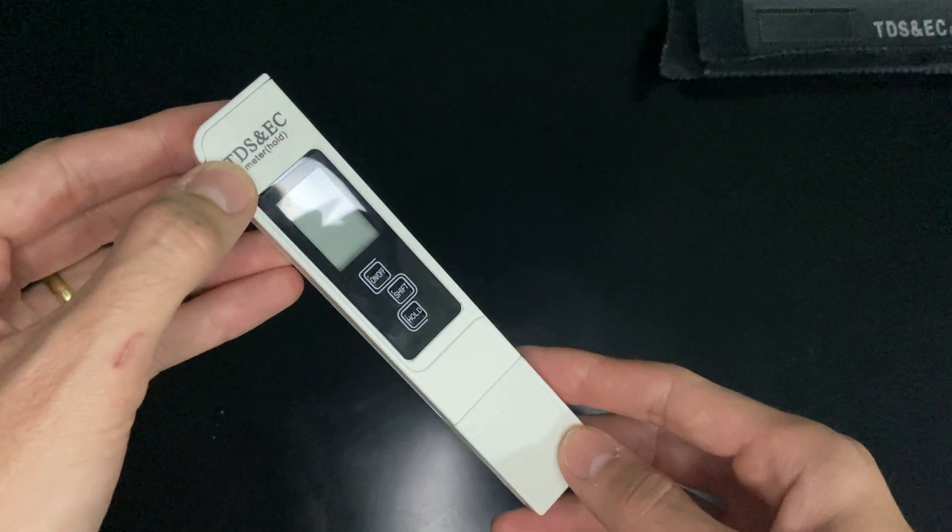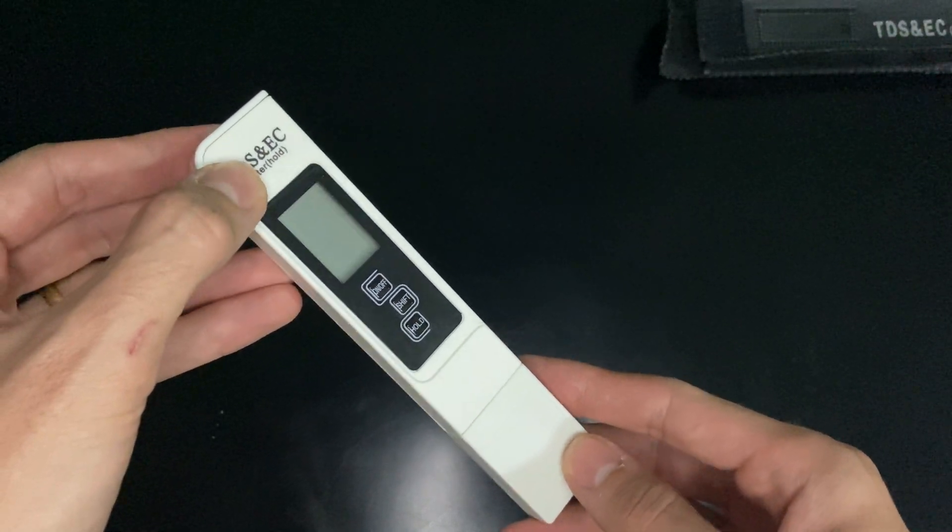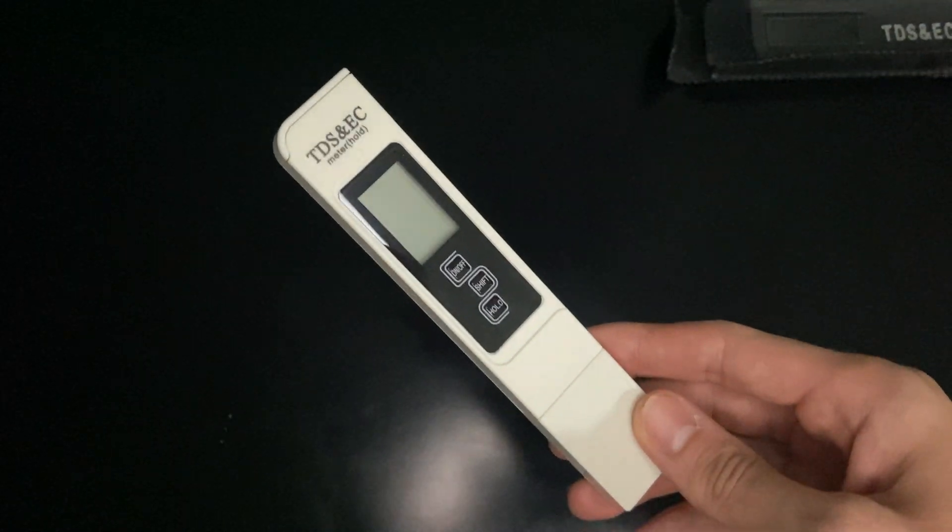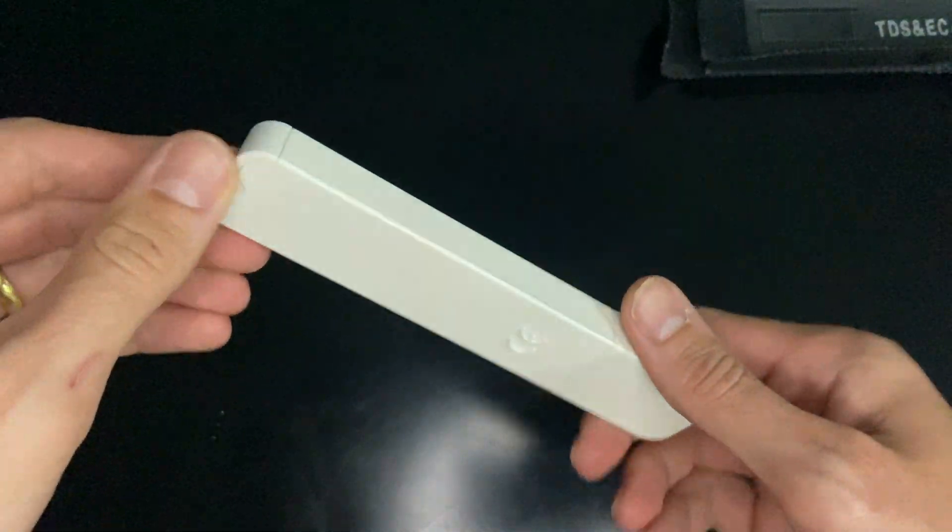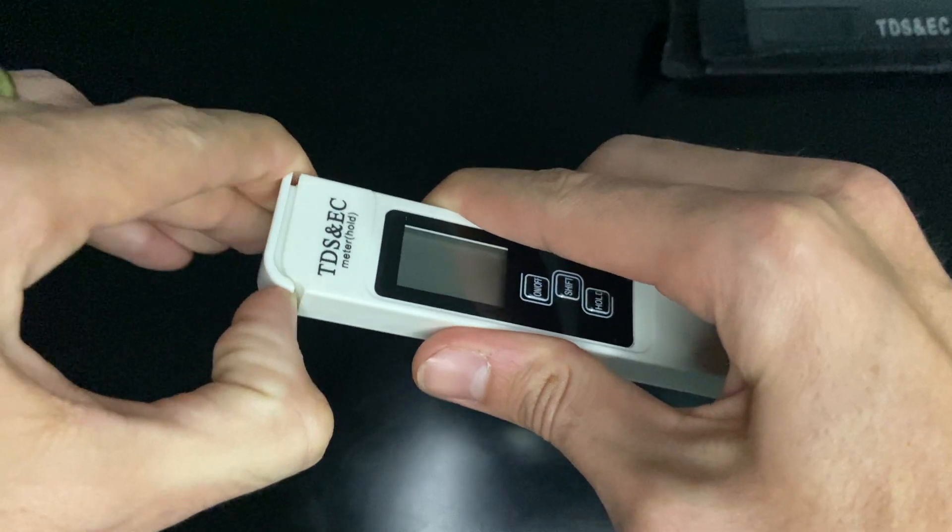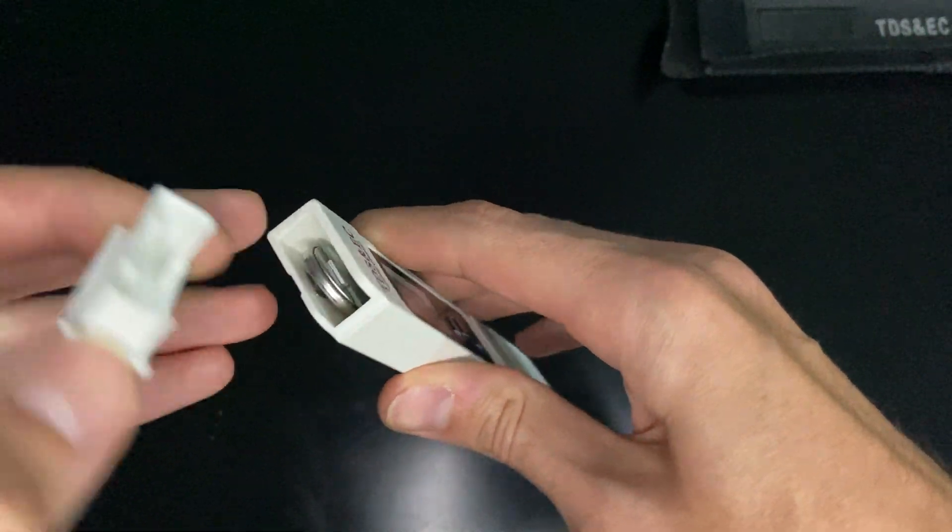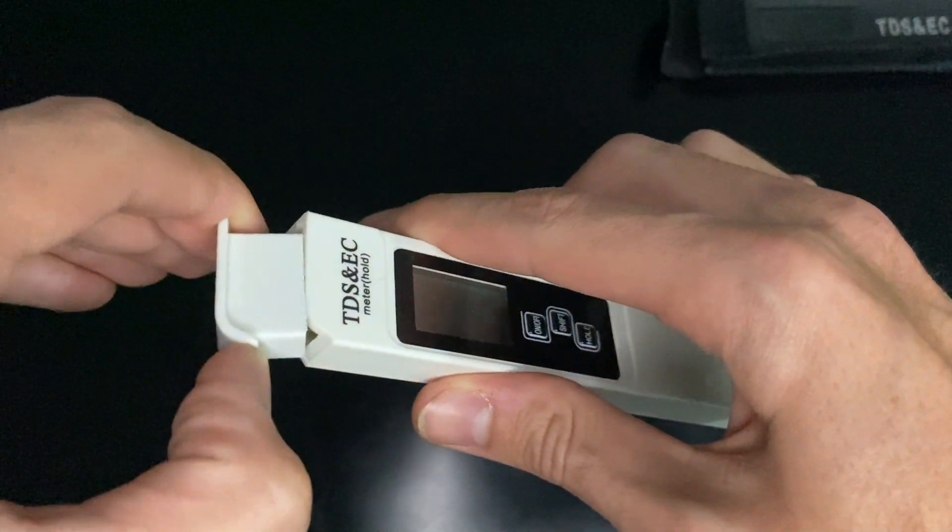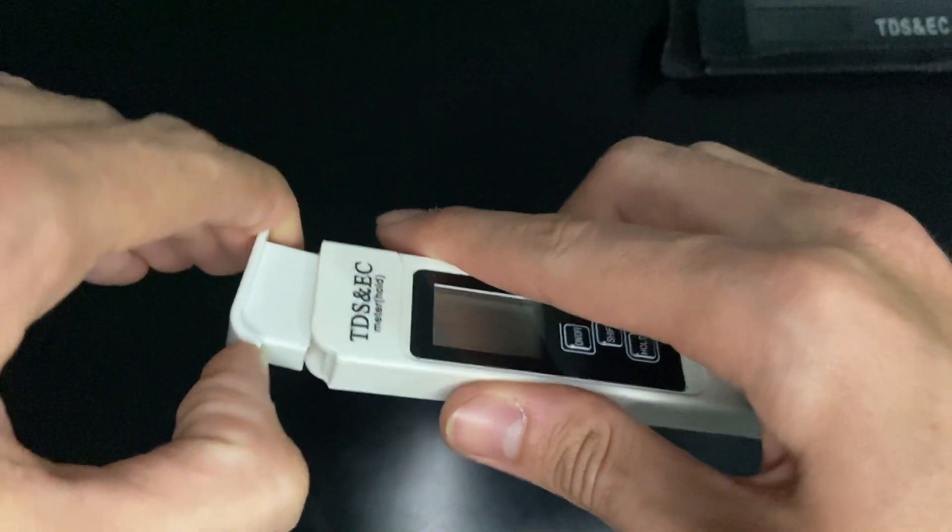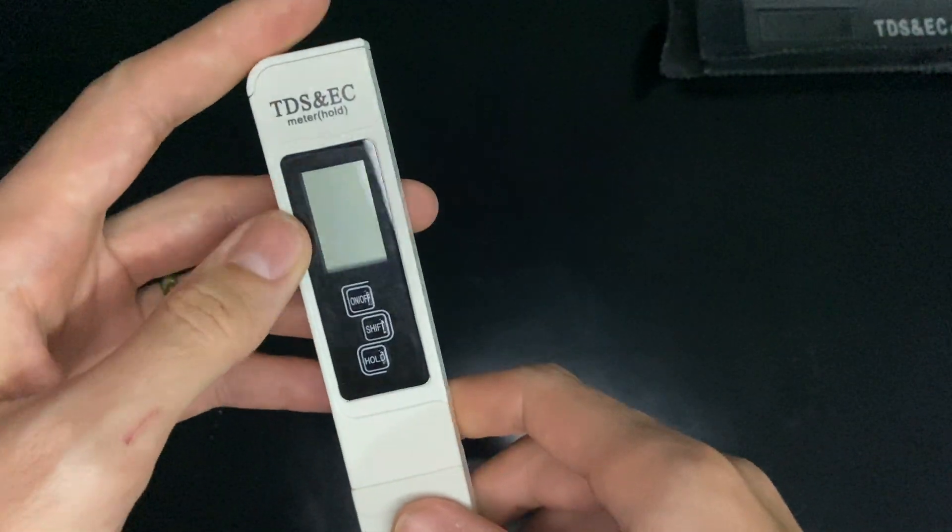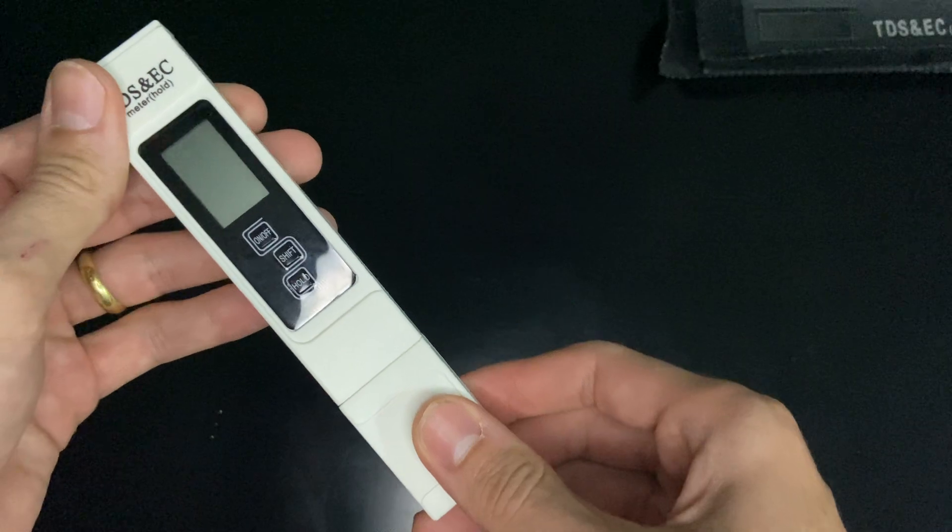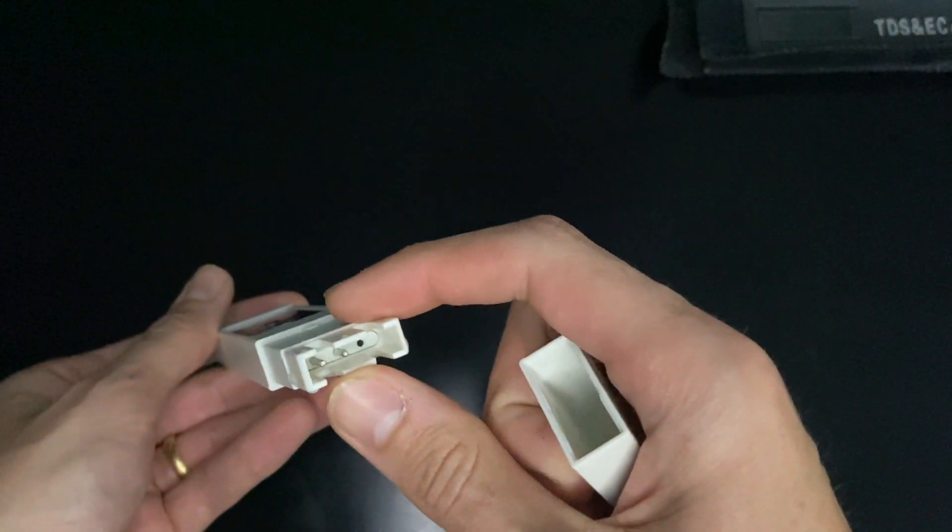It came already with the battery. As you can see here at the top, it's a watch battery, CR 2032. How does it work? This pen has two metal probes here.